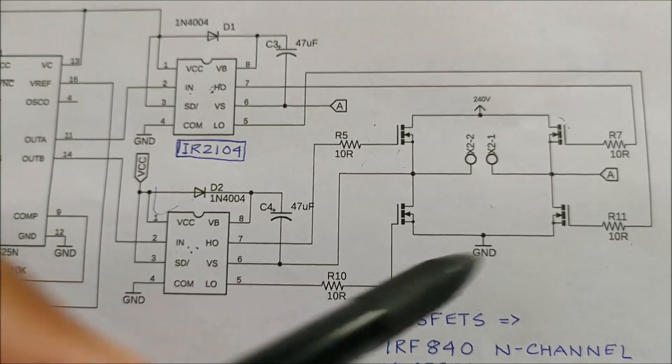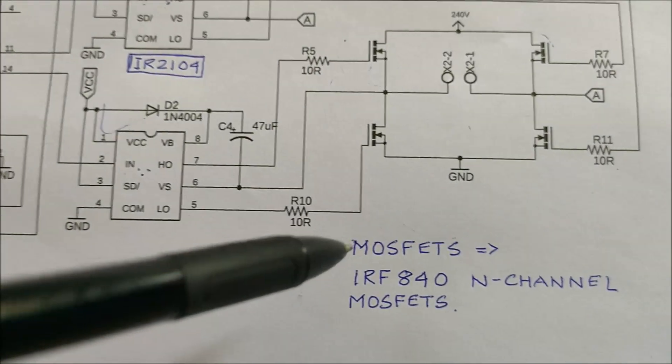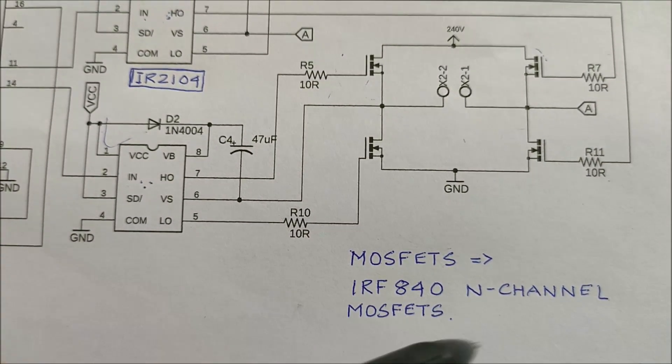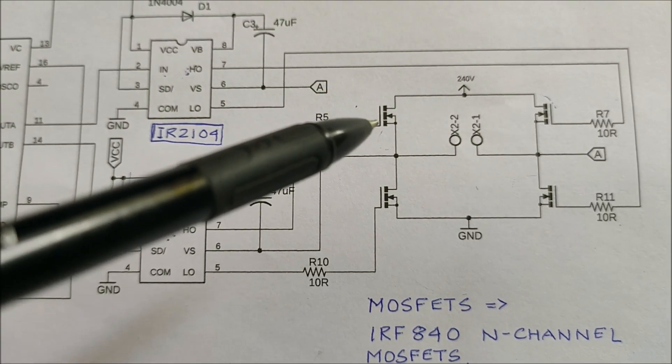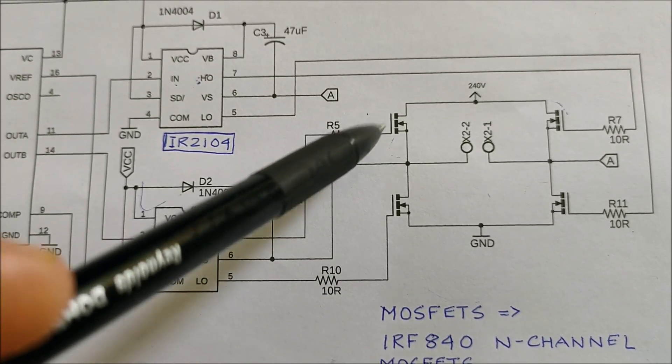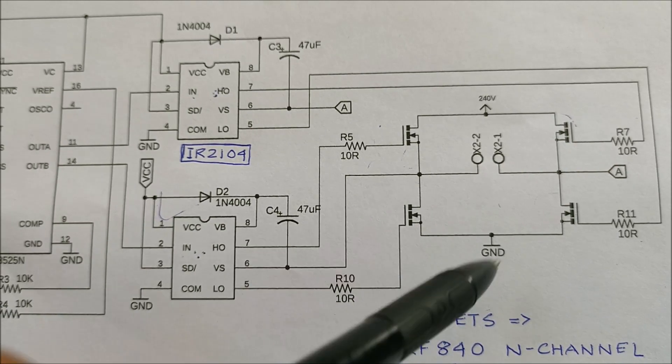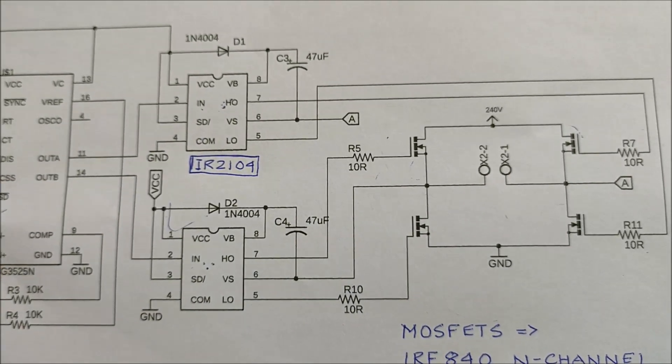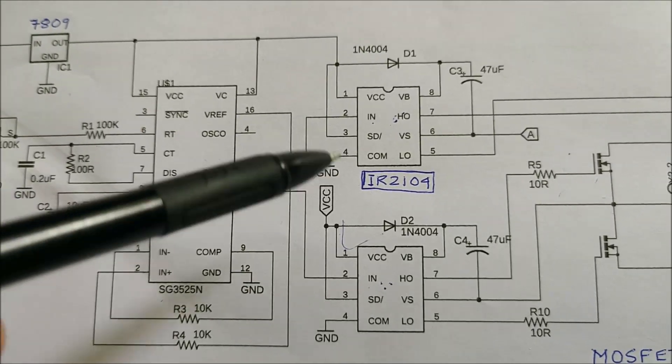Now the AC signal is obtained by the following H-bridge consisting of 4 MOSFETs. The MOSFETs are IRF840 N-channel MOSFETs which are capable of switching voltages up to 600V. So these MOSFETs are ideal for our application. These two MOSFETs are called the high side MOSFETs and the lower ones are called the low side MOSFETs. To efficiently drive them I have used the following MOSFET driver IR2104.